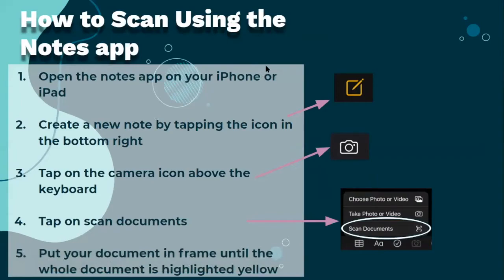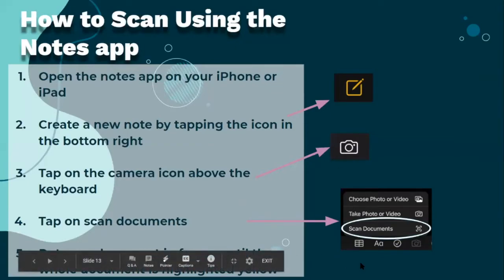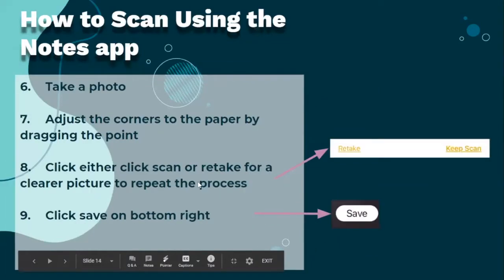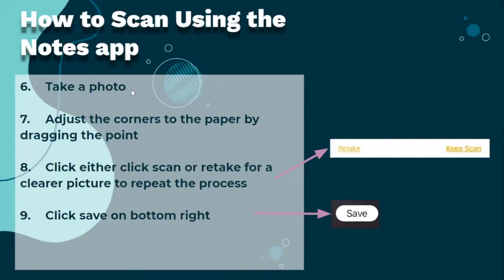Next, we'll talk about how to scan using the Notes app. Open the Notes app on your phone or iPad. Create a new note by tapping the icon in the bottom right. Tap on the camera icon above the keyboard, then tap on Scan Documents. Take a photo, then adjust the corners to the paper by dragging the points. Click either Scan or Retake for a clearer picture, then click Save on the bottom right.